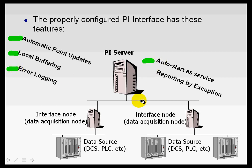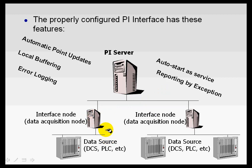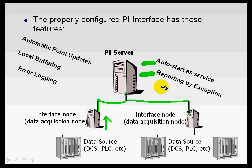We'd like the interface to automatically start up as a service. On the day that the entire network goes down and everything comes back up, when the interface node is back up and running, you would like it to inquire of the server, 'Are you there?' — and then start sending data as soon as it can. So we want automatic startup after reboot. We also would like to report by exception, meaning we only want to receive new data when that data has changed significantly from the previous values. That's what we mean by reporting by exception, or exception testing.